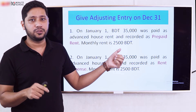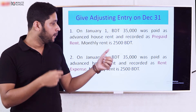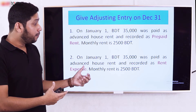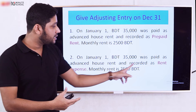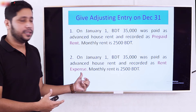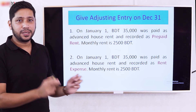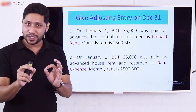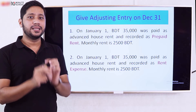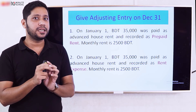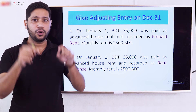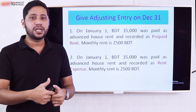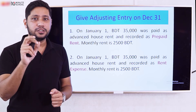The months elapsed multiplied by the monthly rate will give the adjusting entry amount. If instead the amount was recorded as Rent Expense initially, then the adjusting entry is Prepaid Rent debit, Rent Expense credit — for the unused portion.